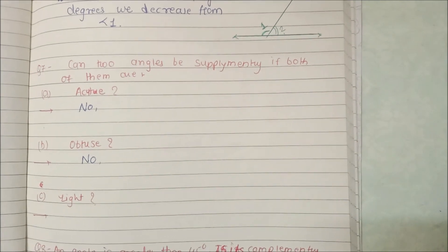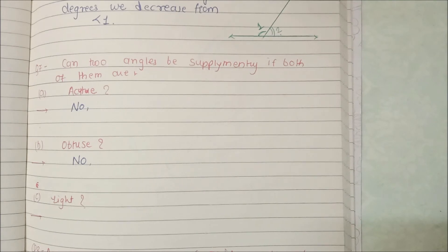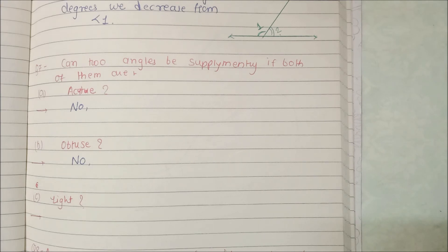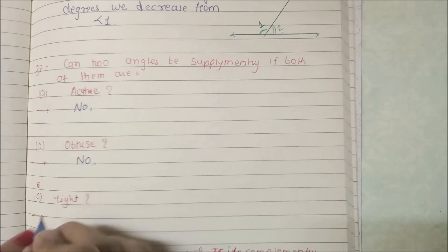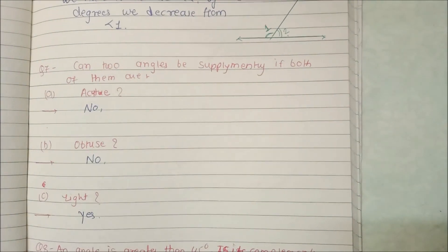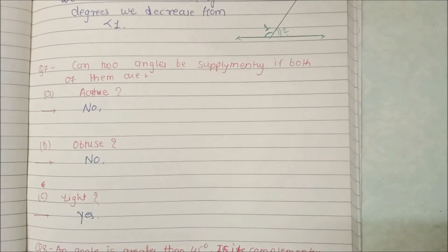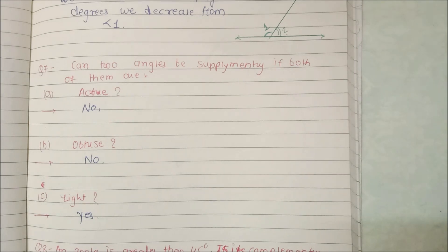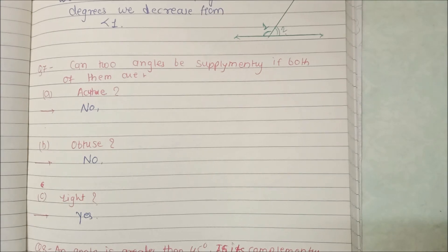The third case is right angle. If both angles are right angles, that means both are 90 degrees. 90 degrees plus 90 degrees equals 180 degrees, and to form a supplementary pair we need exactly 180 degrees. So the answer here is yes — if both angles are 90 degrees, they are right angles and they are supplementary. That is how we write the answer for Question 7.